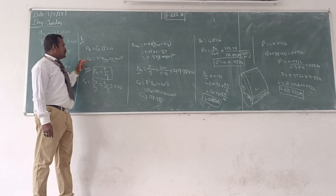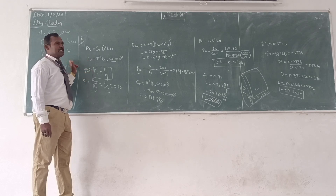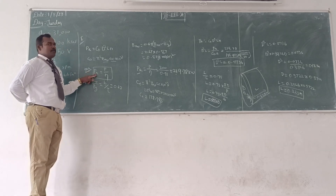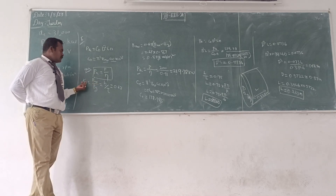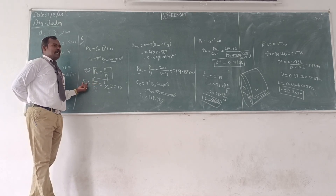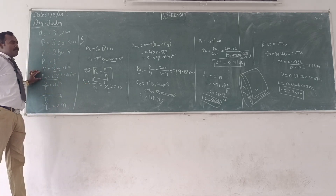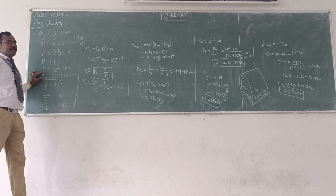From that we can calculate. C0 is the output coefficient. It is the generator, so PA is the power developed in the armature. PA should be equal to P divided by the efficiency. Now, the maximum gap density — that is the Bg or Bm value — is given. They are not given BAV directly; the specific magnetic loading BAV value is missing.